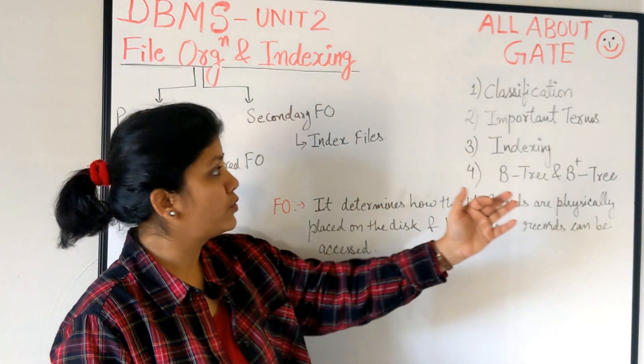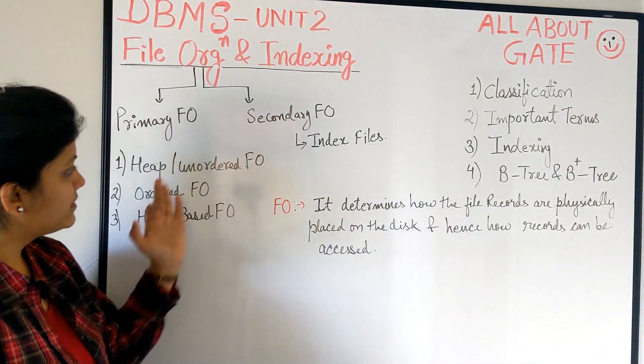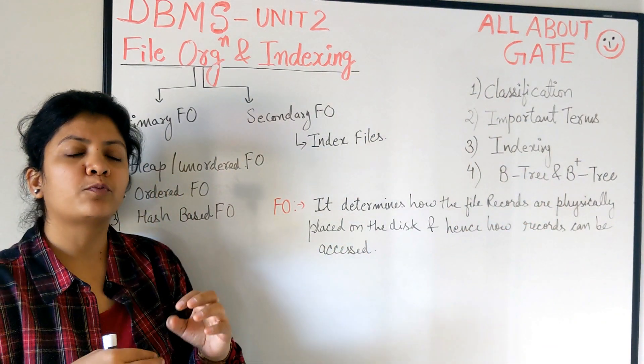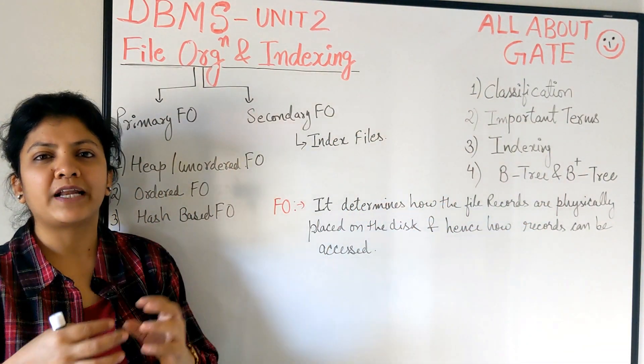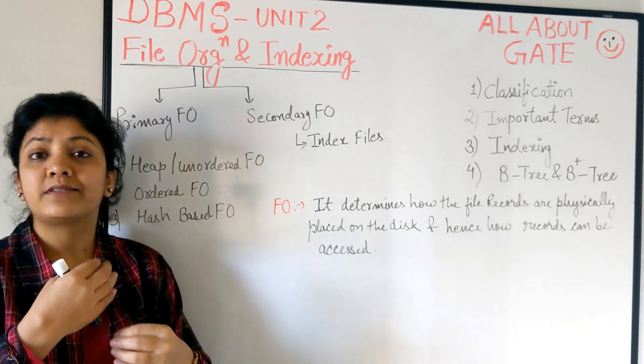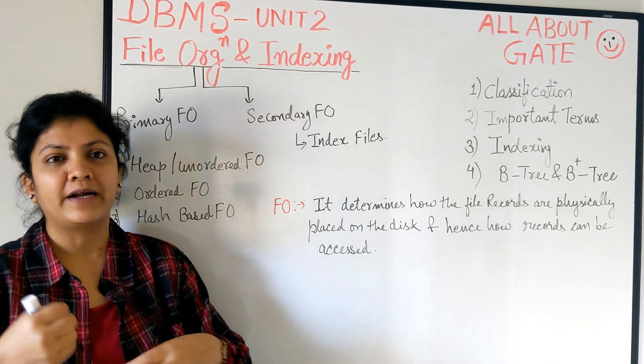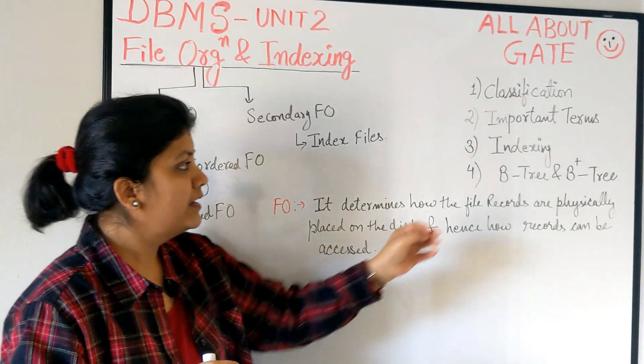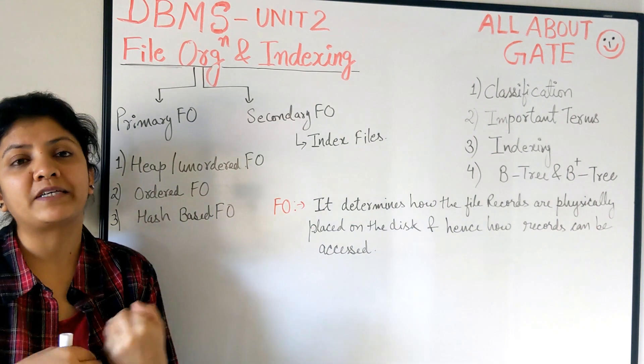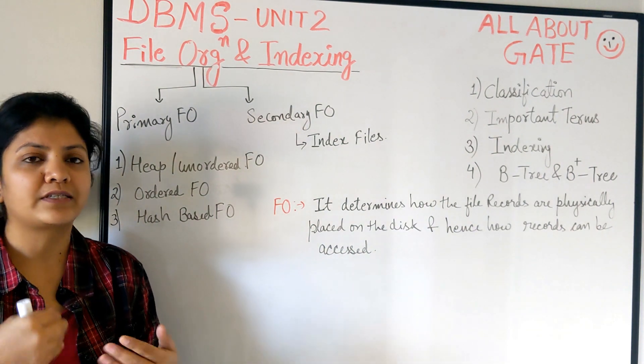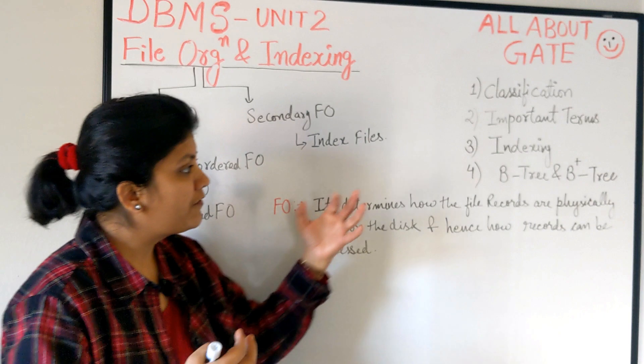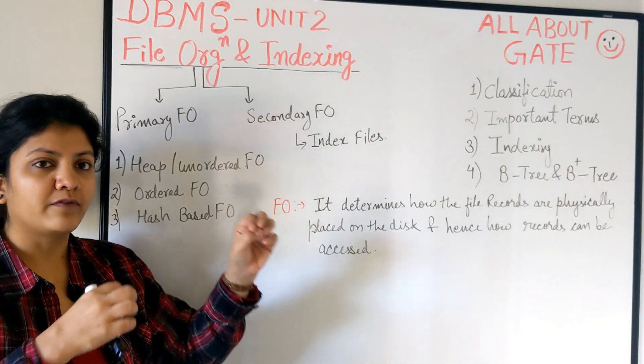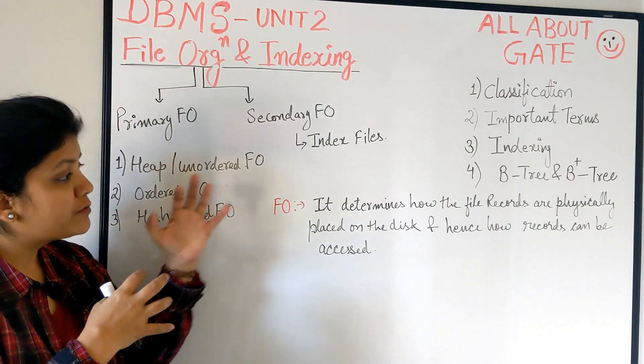What we're going to study: classification of these types of organization, then important terms to understand for the indexing concept - terms like blocking factor, types of records (spanned, unspanned), sparse index, dense index, etc. Then we come to the indexing concept with multiple types: primary, cluster, secondary, single level, multi level, and then we'll study the B-tree and B-plus trees.